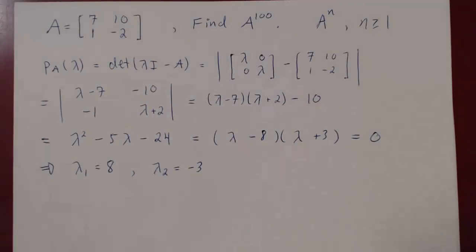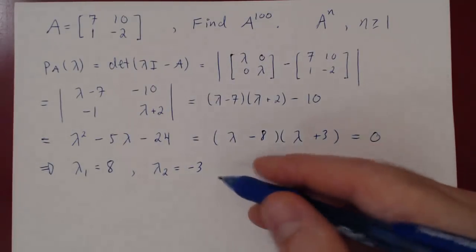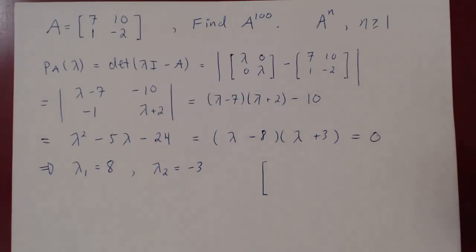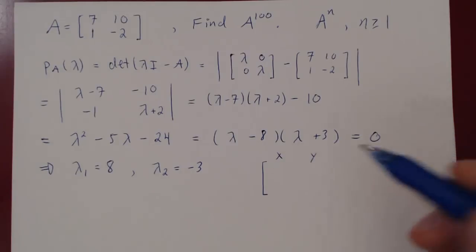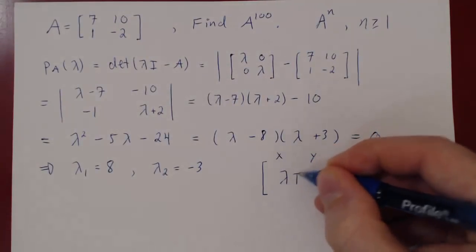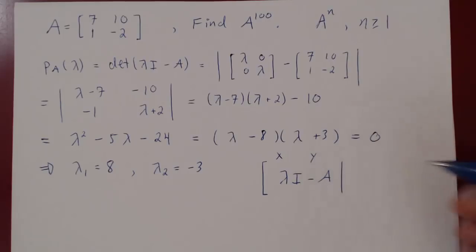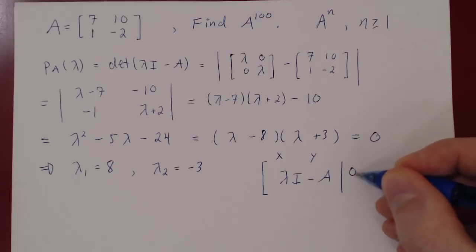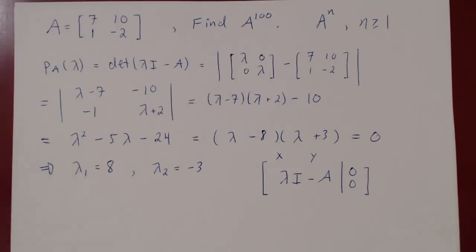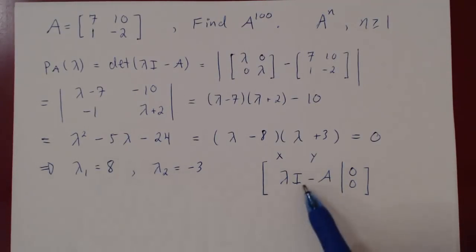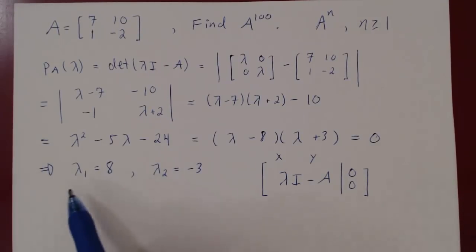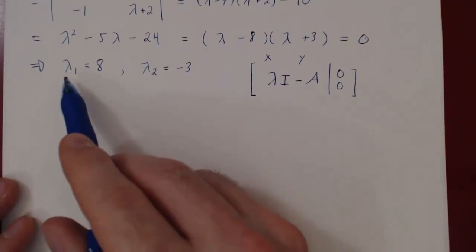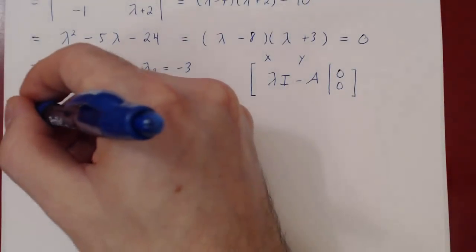Now we have the two eigenvalues. For each one, we need to find a corresponding eigenvector. To find the eigenvector, we solve the linear system with coefficient matrix λI minus A, where the eigenvector components are x and y. The system is always homogeneous, with constant terms equal to 0. We solve for this system when λ = 8, then when λ = -3.